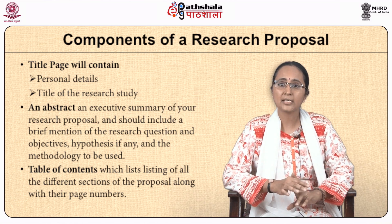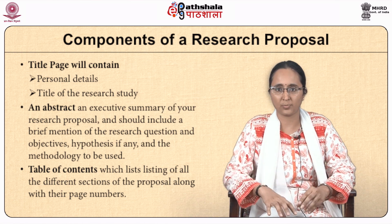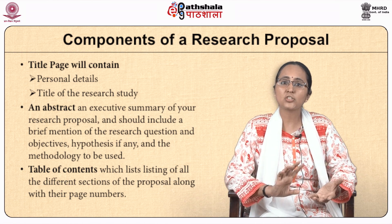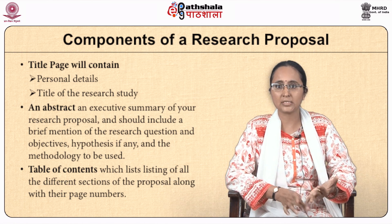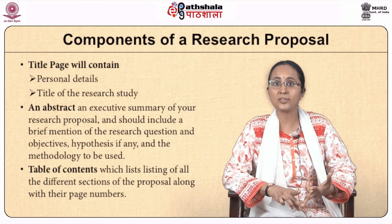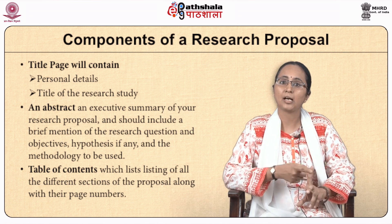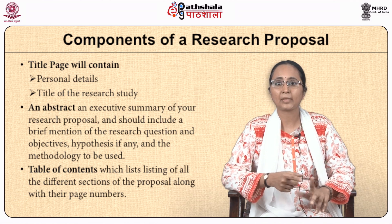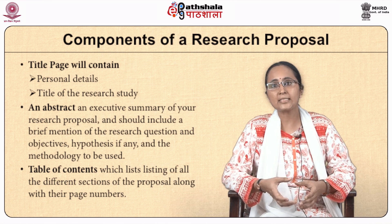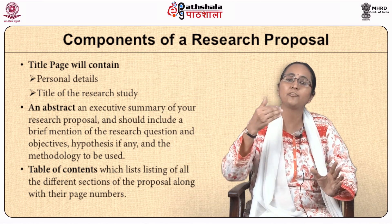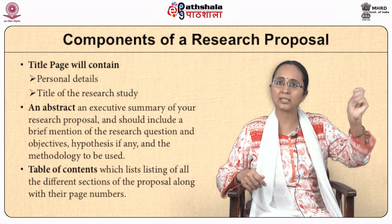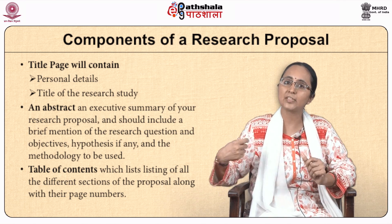An abstract is an executive summary of your research proposal, about 150 to 300 words. It should have a brief mention of the research question, your objectives, hypothesis if it is a quantitative research, methodology in brief, the design, the sample, and research tools. You might write the abstract after you've finished writing the entire proposal, then pick this information from each of the sections.